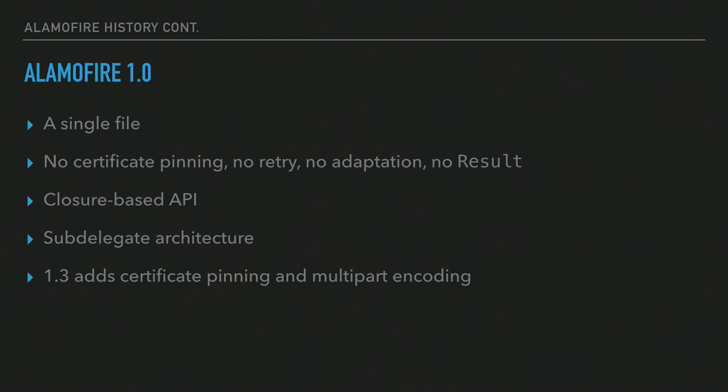This was Swift 1.0 best practices: everything's a closure. No more Objective-C blocks — much simpler syntax, much easier to use. It had what I call the subdelegate architecture, which I'll go into in a minute. But by version 1.3, certificate pinning and multi-part encoding were finally added, which are two of the biggest features requested to be ported over from AFNetworking.